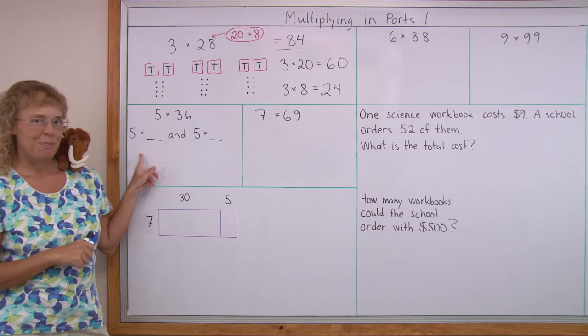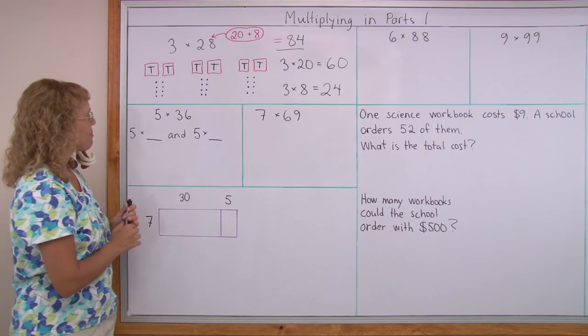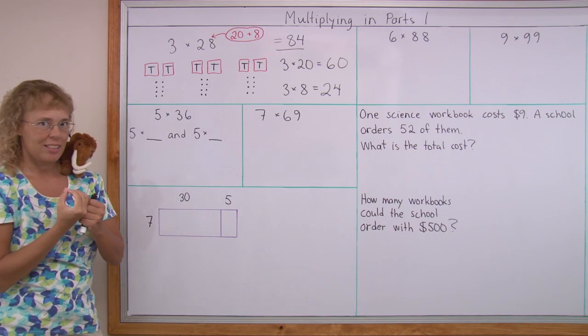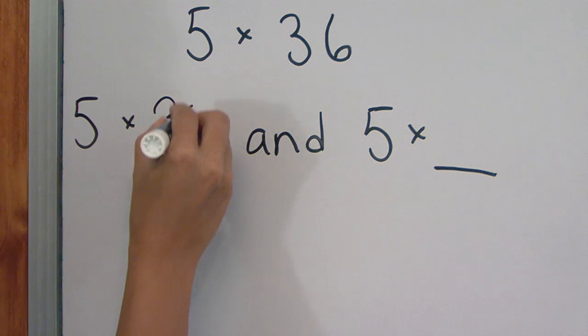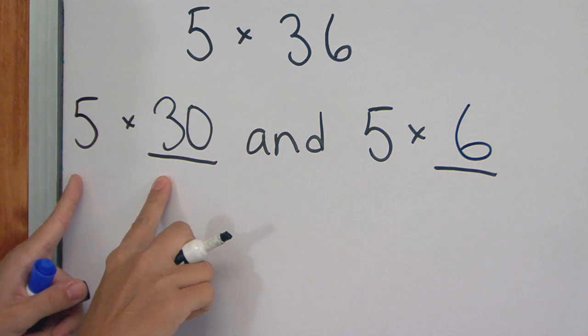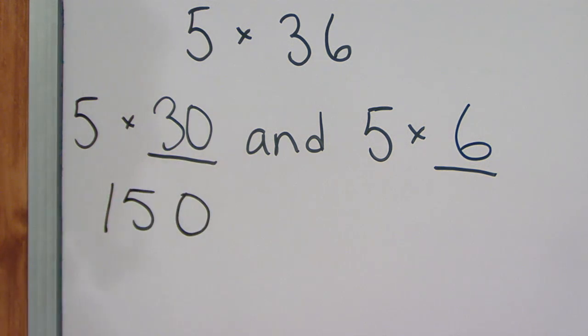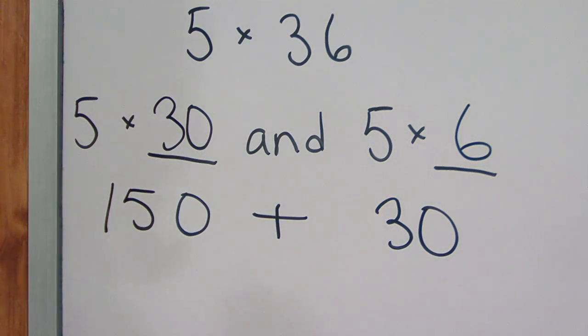Now let's try this example: 5 times 36. Think of 36 as being in two parts, 30 and 6. We multiply 5 times 30 and 5 times 6 separately. 5 times 30, you remember how to do that, right? Go 5 times 3 and tag a 0 there. And then 5 times 6 is 30. And then we add those to get 180.